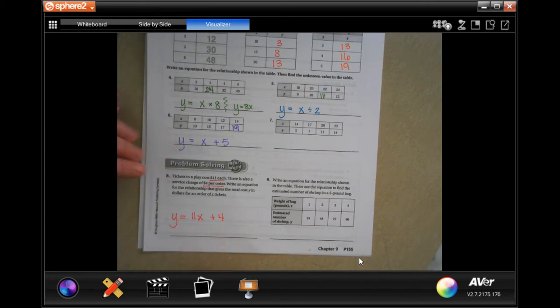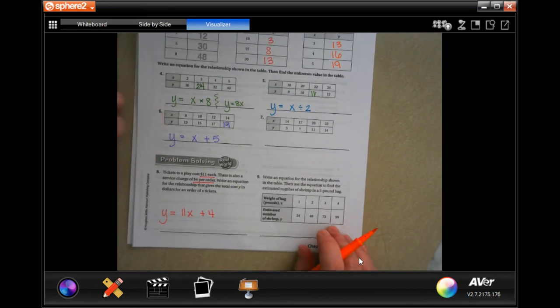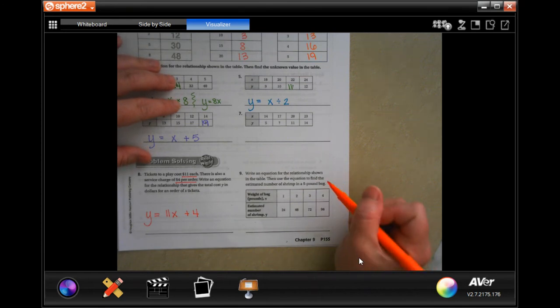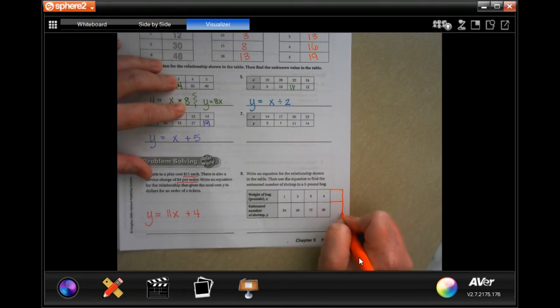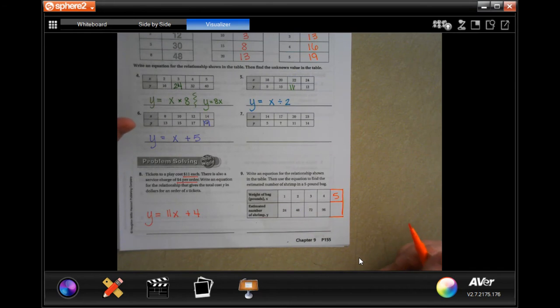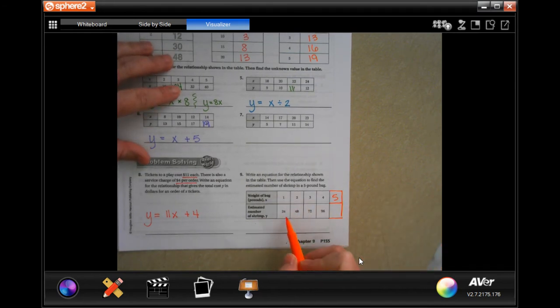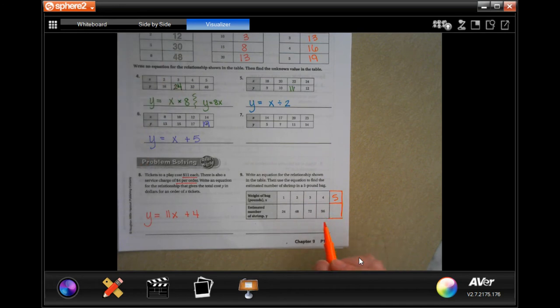I know y'all use an x as a multiplication sign so it's a little rough but you're in algebra now guys. All right so we need to write an equation for the relationship shown in the table and then use the equation to find the estimated number for five, so I'm going to extend this and put a 5 right there. So to get from 1 to 24 I can add 23 or I can multiply by 24. If I do 2 plus 23 I get 25, that's not 48, but if I multiply 2 by 24 I do get 48. If I multiply 3 by 24 I do get 72. If I multiply 4 by 24 I do get 96. So let's do 5 times 24.